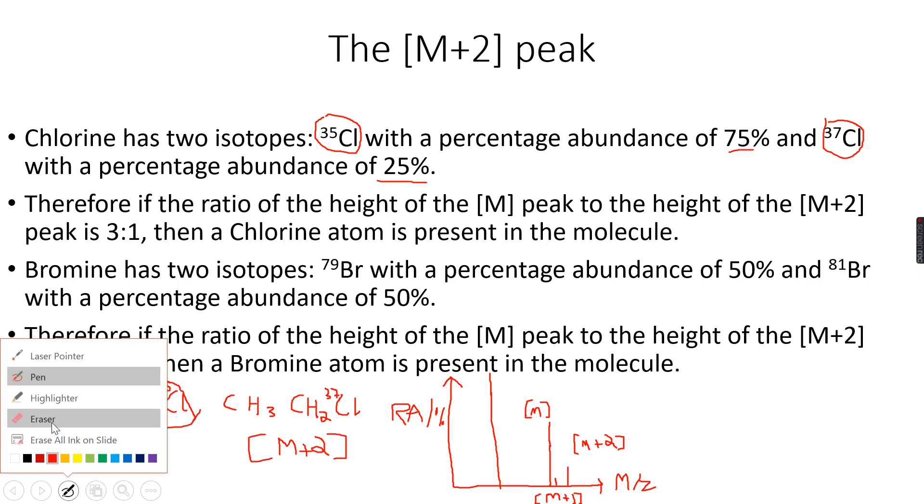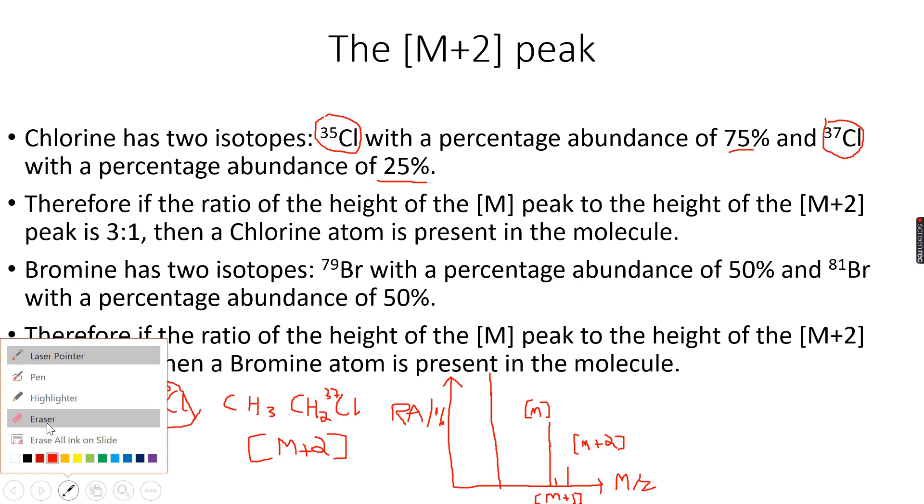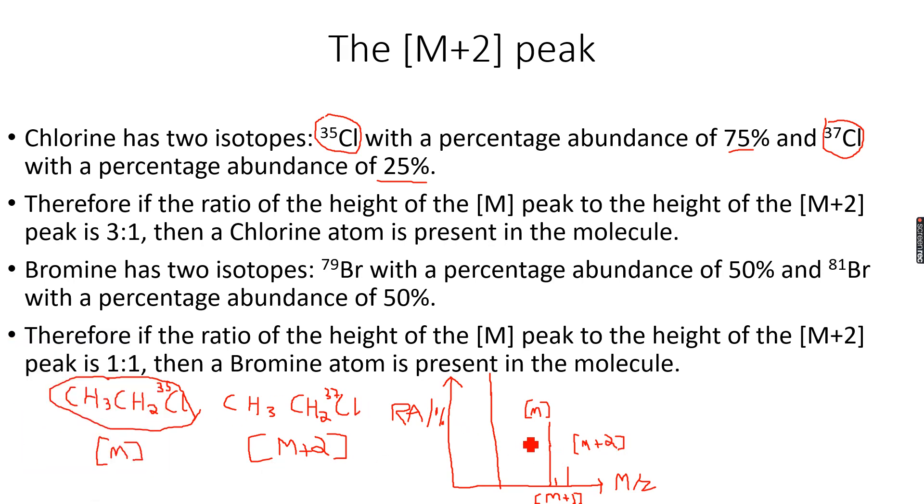Let me take out my pointer and point these out. This is the M peak, the small one in the middle is the M+1 peak, and the one after that, which is one atomic mass unit higher, is my M+2 peak. You can see the difference in the heights.